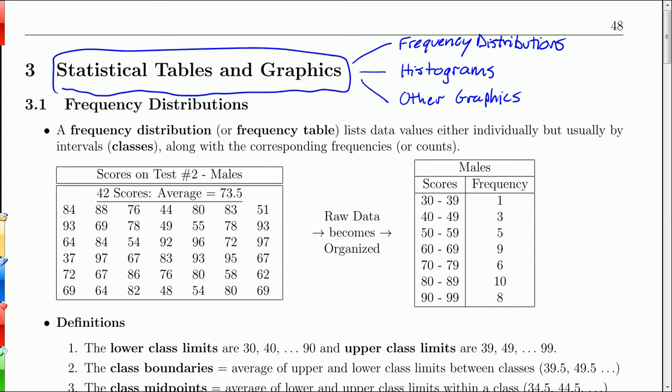We start off by looking at frequency distributions, where we take a bunch of raw data, which is difficult for humans to digest very easily, and we change them into what are known as frequency tables. It allows us to break the data up into classes and then give us the frequency. So it gives us a little picture of how the data is distributed.